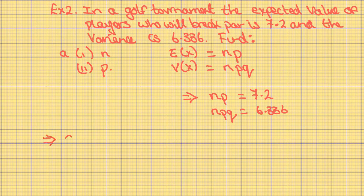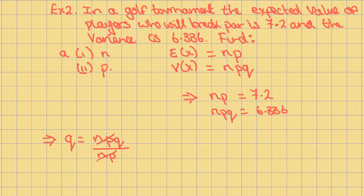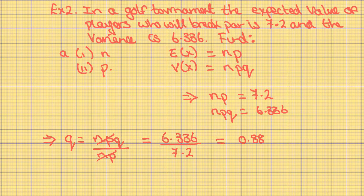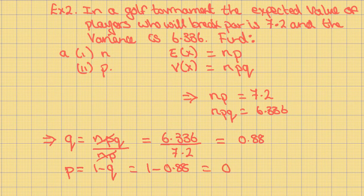Therefore, Q is equal to NPQ divided by NP. NP cancels, giving Q equal to 6.336 divided by 7.2, which is equal to 0.88. Since we know Q, we can find P, because P is equal to 1 minus 0.88, which is equal to 0.12.